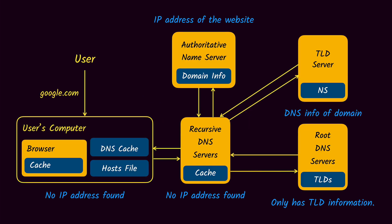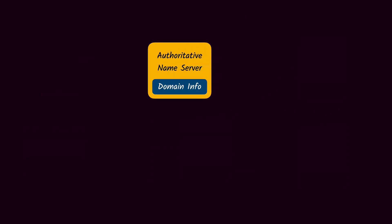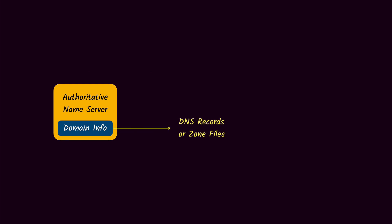Our topic for today is the DNS records. In our last lesson we looked at the DNS — if you haven't watched that video I would recommend you go watch that first. In this one we are going to focus on the authoritative name servers, or mainly the information that is stored there. The information stored at the authoritative name servers is called the DNS records or the zone files.